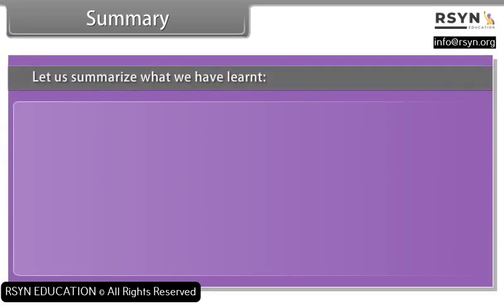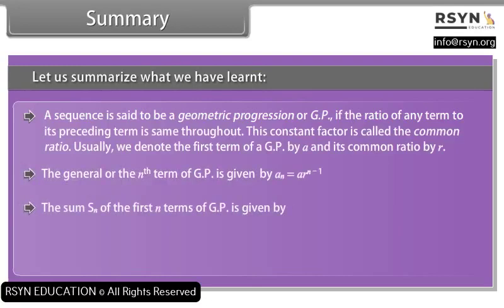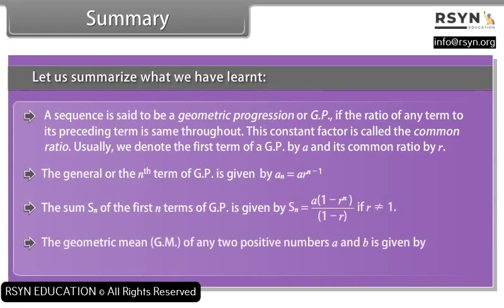Summary: A sequence is said to be a geometric progression or GP if the ratio of any term to its preceding term is the same throughout. This constant factor is called the common ratio, denoted by R, with first term A. The nth term of GP is Aₙ = A×R^(n−1). The sum Sₙ of the first n terms of GP is given by the standard formula. The geometric mean of two positive numbers A and B is G = √(AB), and the sequence A, G, B is a GP.